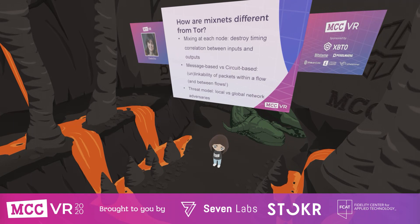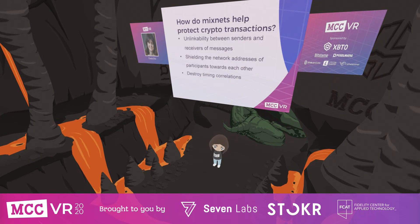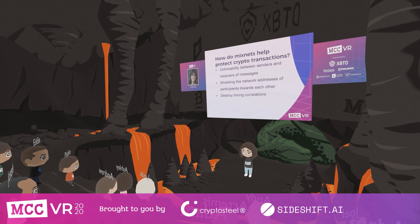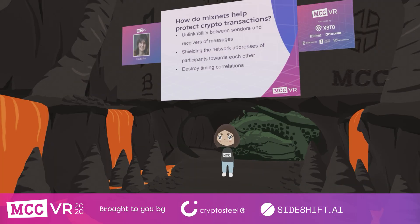So how can mix nets help protect crypto transactions? Mix nets provide unlinkability between senders and receivers of messages, so a network adversary can no longer determine who is connecting to whom. If the mix net is used for multiple applications beyond a single cryptocurrency, it's not even possible to know whether someone is connecting to Bitcoin at all. Additionally, mix nets shield network addresses of participants from each other, and because traffic flows are disrupted by mixing, timing correlations are destroyed, making timing-based attacks infeasible.